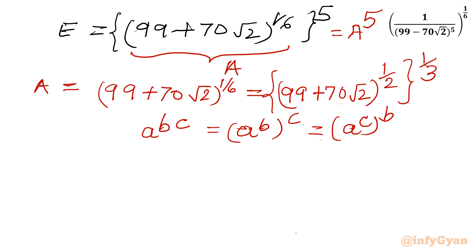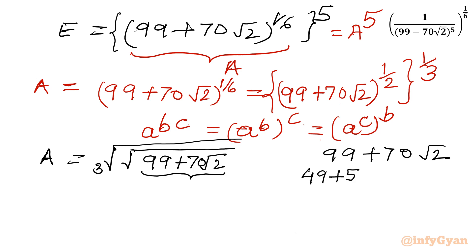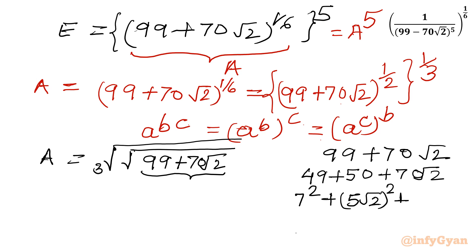So 'a' is the cube root of the square root of (99 plus 70√2). Now let us look at 99 plus 70√2 separately. I can write it as 49 plus 50 plus 70√2. Now 49 is 7², and 50 is (5√2)² since 25 times 2 is 50. Checking the middle term: 2ab equals 2 times 7 times 5√2, which gives 70√2. Yes, it is matching. So 99 plus 70√2 equals (7 plus 5√2) whole square.